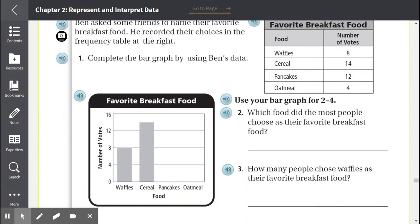Number 1, complete the bar graph by using Ben's data. So waffles, 8. Cereal, 14. There's no 14, so they put it between 12 and 16, and 14 would be right in the middle. Pancakes, 12. Oatmeal, 4.